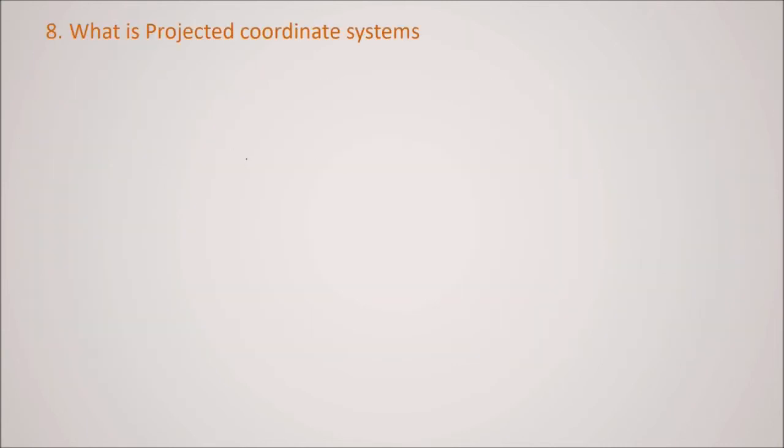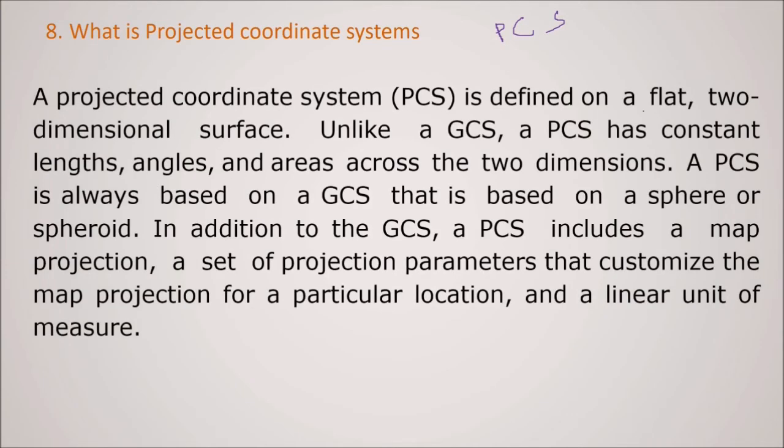What is PCS now, projected coordinate system? A PCS is defined on a flat two-dimensional surface. Unlike GCS, PCS has a constant length, angle and areas across two dimensions. So PCS is always based on a GCS that is based on a sphere or a spheroid. So in addition to this GCS, a PCS includes a map projection, a set of, because you know, 3D to 2D, there has to be some projection. So in addition to GCS, PCS includes a map projection, a set of projection parameters that customize the map projection for a particular location and also a linear unit of measure.